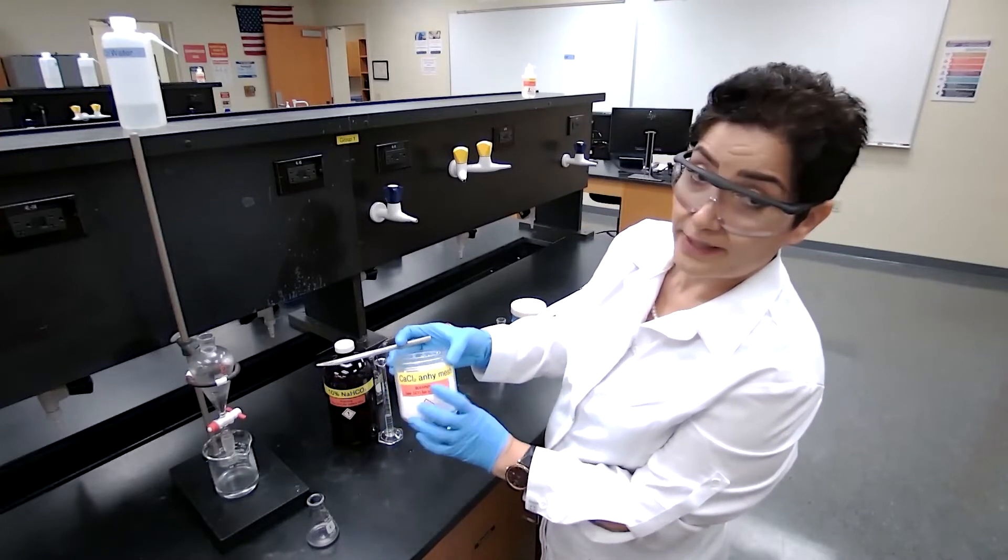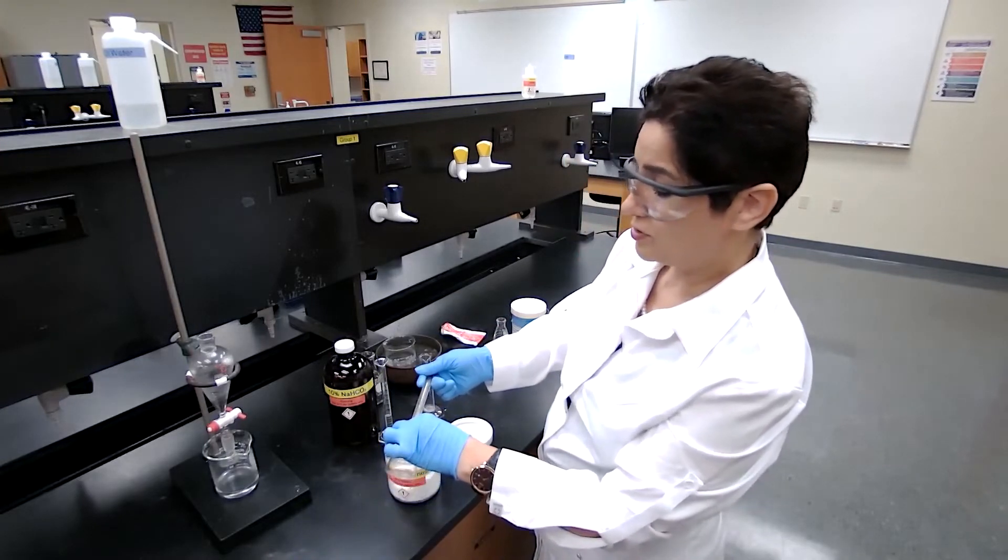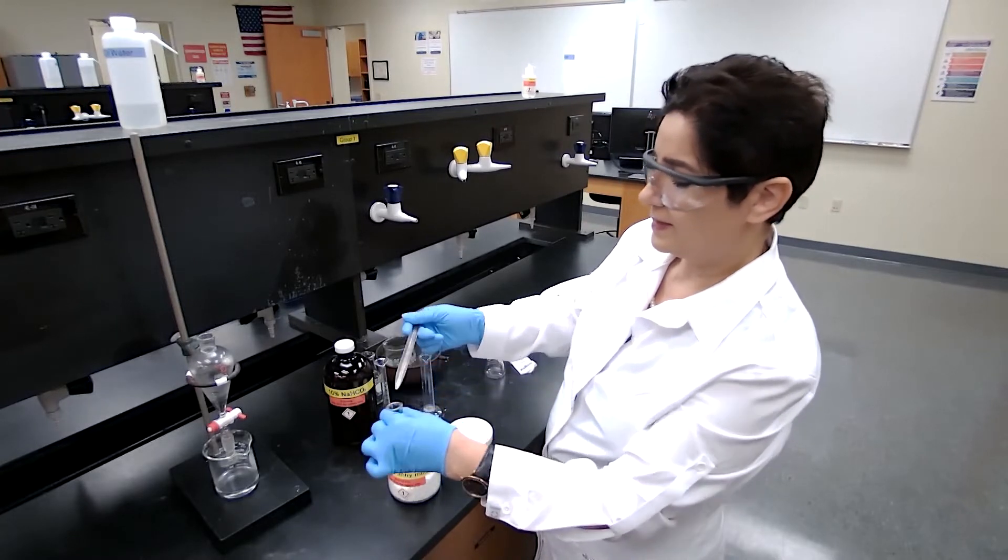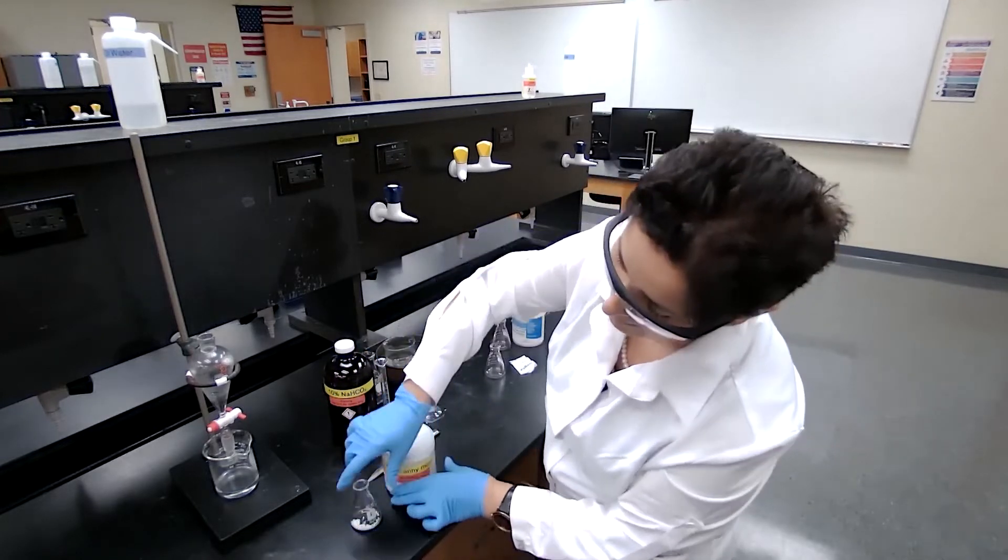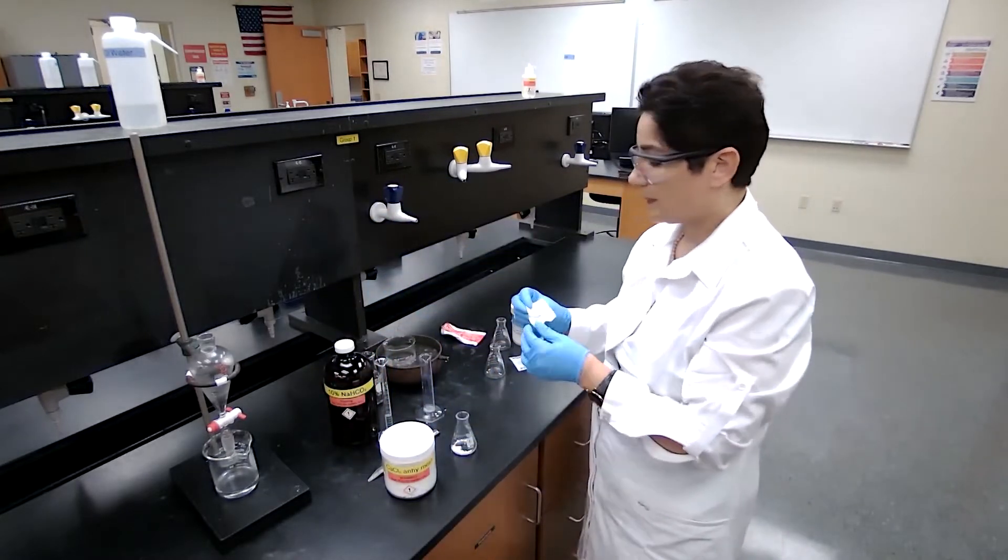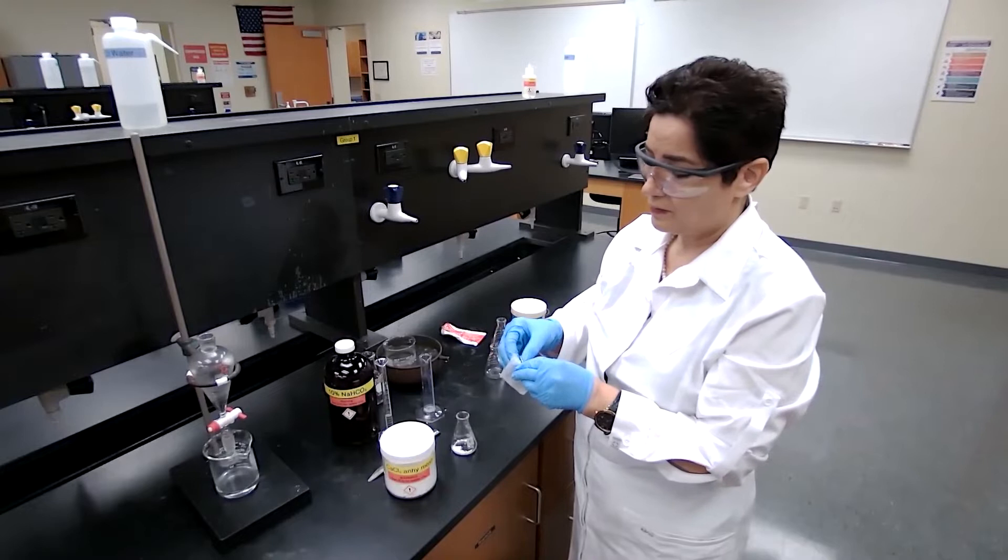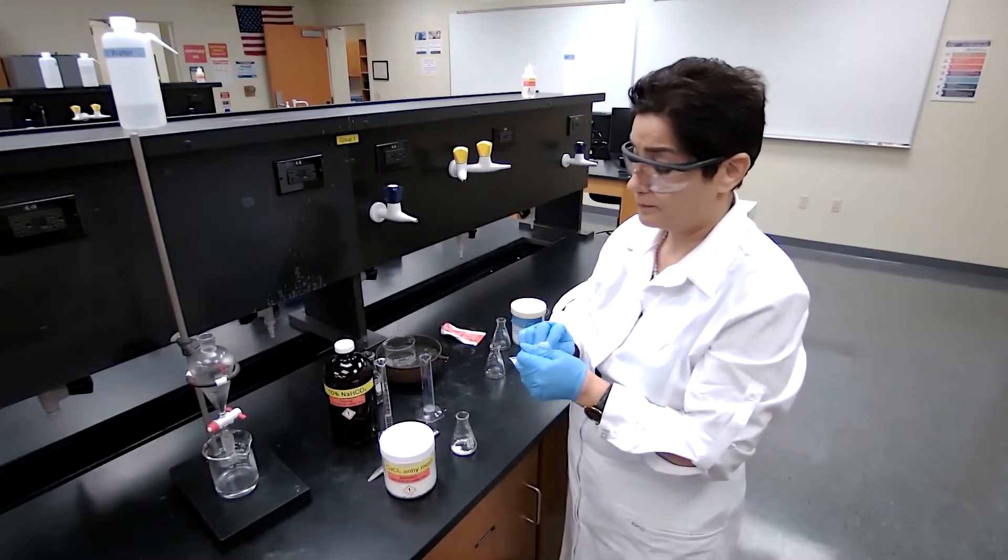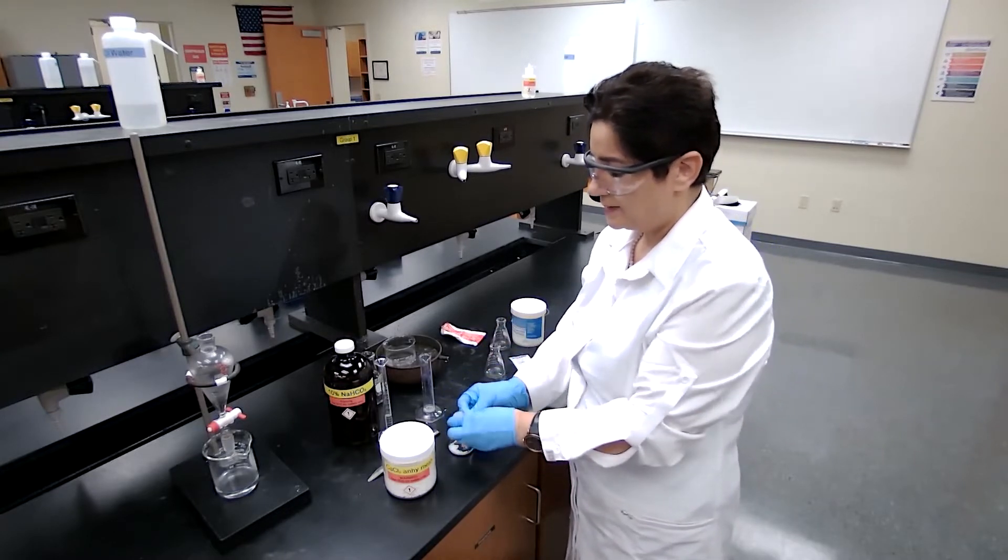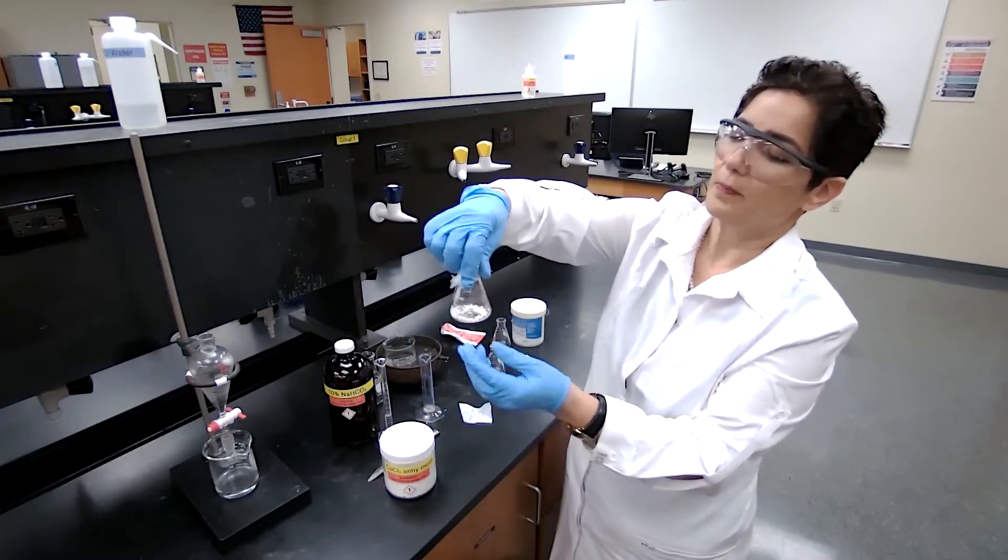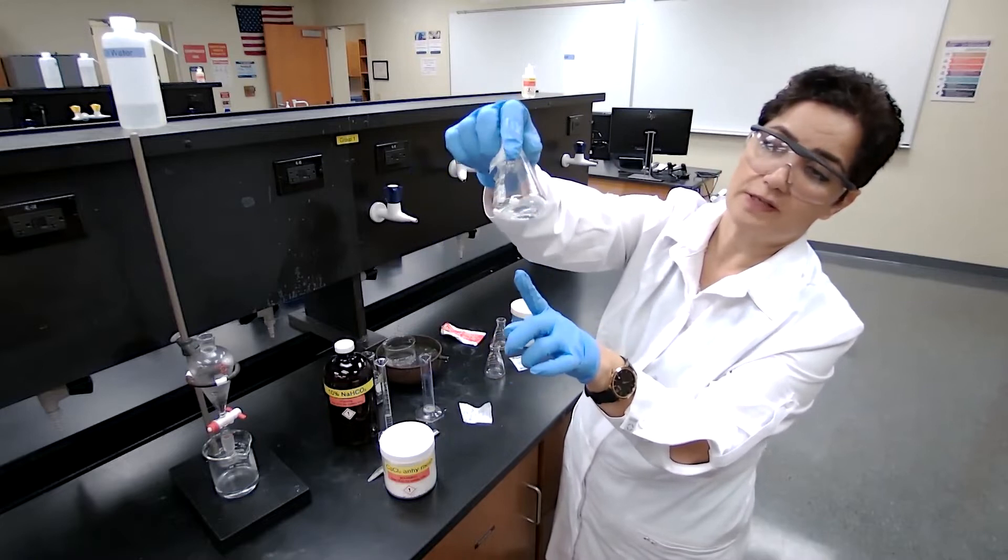We are going to add anhydrous calcium chloride, and these are very easy to separate compared to sodium sulfate and magnesium sulfate because it comes in pellets or mesh. I close it with parafilm. Wait for three to five minutes for the anhydrous agent to work and remove the moisture. I know I have enough of the drying agent because the calcium chloride is moving around.